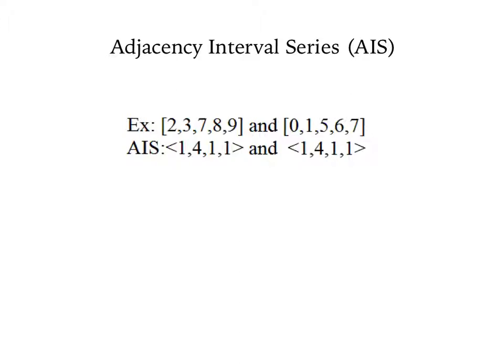To find the AIS, calculate the interval between each adjacent pitch class. For example, the interval between 2 and 3 is 1, the interval between 3 and 7 is 4, and so on. Do this for both sets.